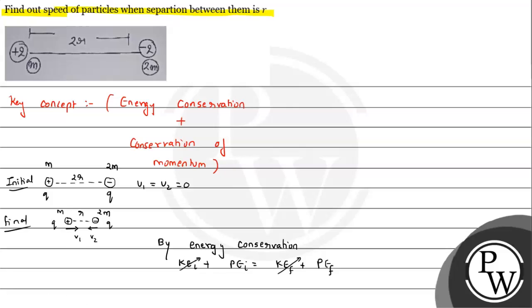Initial potential energy between the two in the initial condition will be minus k q squared upon 2r.